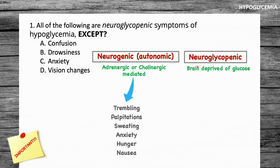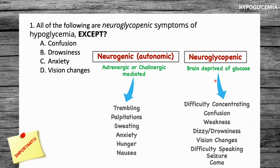Moving on to neuroglycopenic — neuro refers to the nerves, and glycopenic refers to a deficiency of glucose to a specific organ, for example the brain. When this happens, it can lead to symptoms including difficulty concentrating, difficulty speaking, confusion, weakness, dizziness, and visual changes. If severe enough, a person may have a seizure and also fall into a coma.